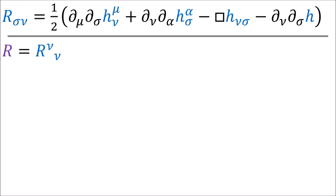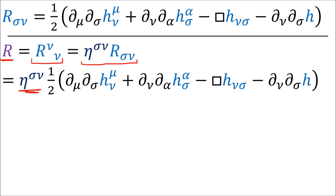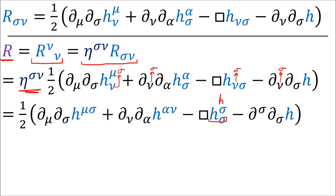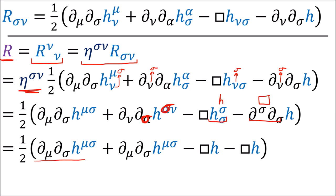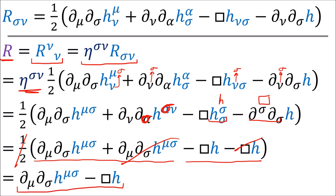Finally, we'll look at the Ricci scalar, which is just the Ricci tensor with one raised index summed with itself, with the index being raised by eta. If we substitute in our Ricci tensor formula, we can use the eta outside to raise all the new indices to become sigmas. The H tensor summed over itself can be rewritten as the scalar H, and two partial derivatives with raised and lowered indices can be rewritten as the d'Alembert operator. Since we can always relabel summation indices, we end up with terms that cancel, leaving us with the result that the Ricci scalar in linearized gravity is the second partial derivative of H with raised indices minus the d'Alembertian of the H scalar.